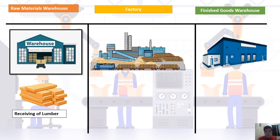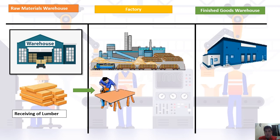We are into the production of furniture, specifically the manufacturing of a table. So we place the materials here first. The major direct material is lumber. Once the lumber is placed in the raw materials warehouse, the next step is to send it to the factory for the production process — it goes to the raw materials warehouse first, then is sent to the factory.